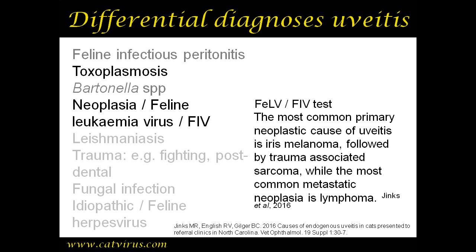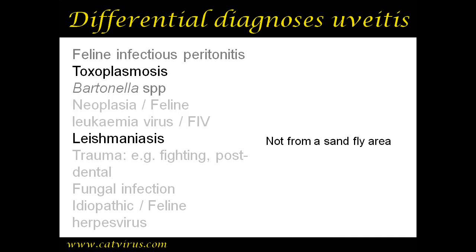The most common primary neoplastic cause of uveitis is iris melanoma, followed by trauma-associated sarcoma, while the most common metastatic neoplasia is lymphoma. Since most lymphoma in the cat is secondary to FeLV or FIV infection, I've grouped neoplasia, FeLV, and FIV together - though FeLV and FIV can cause uveitis without neoplasia. Tommy was FeLV and FIV negative, which doesn't rule out neoplasia but does make it less likely - something to come back to if no diagnosis is found. Leishmaniasis is next on the list, but since Tommy isn't from a sandfly area, that is ruled out.